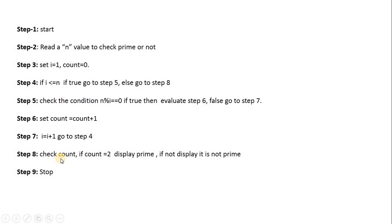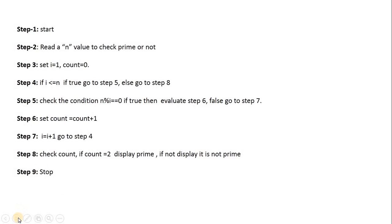In step 8, we check the count value. If count equals 2, display prime. Since we took n=5, count is exactly 2, so we display that 5 is a prime number. If count is not equal to 2, display not prime. Step 9: Stop. This completes the algorithm for prime number.